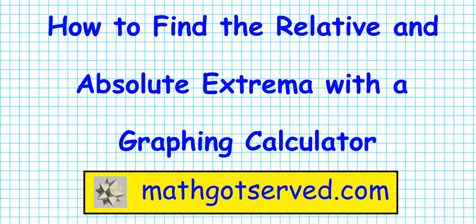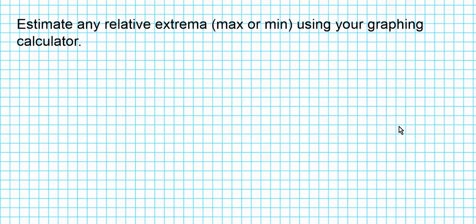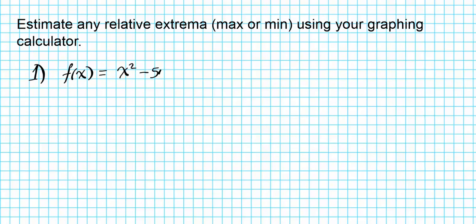Good day students, welcome to map.serve.com. In this video we're going to be going over how to find the relative and absolute extrema with a graphing calculator. For question number one, we need to estimate any relative extrema — when you see the word extrema, you're basically looking at maximum or minimum. We have the function f(x) = x² - 5x.